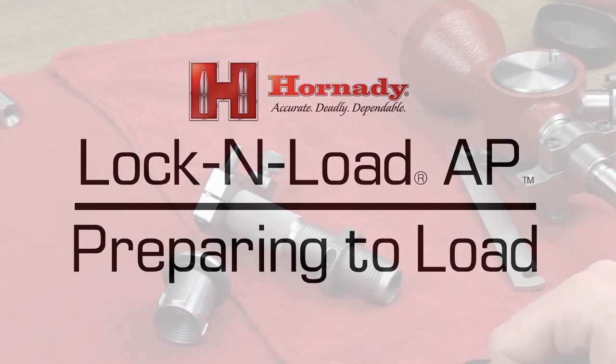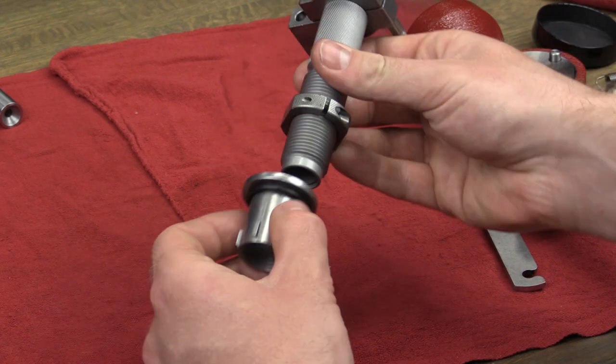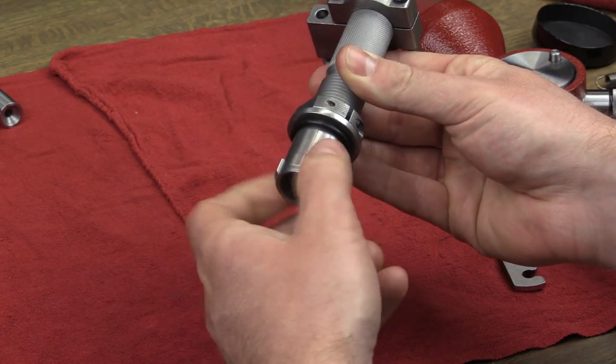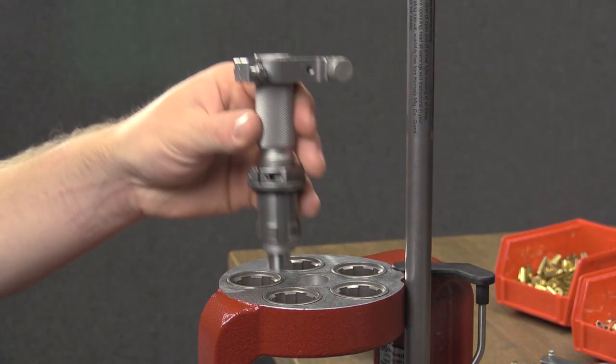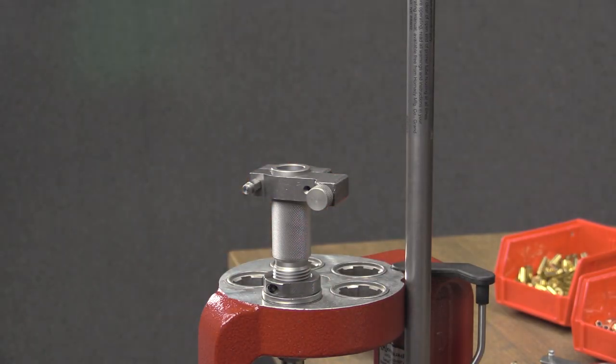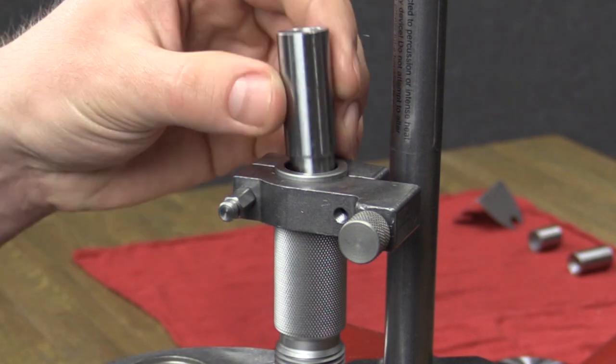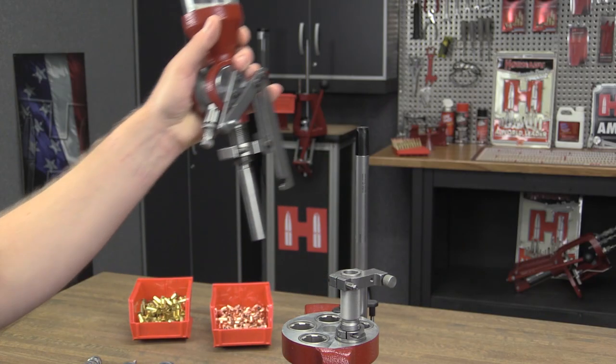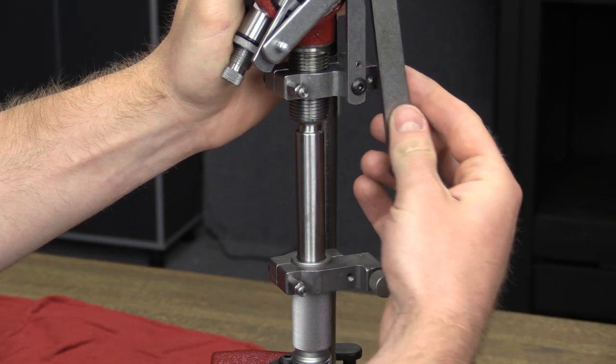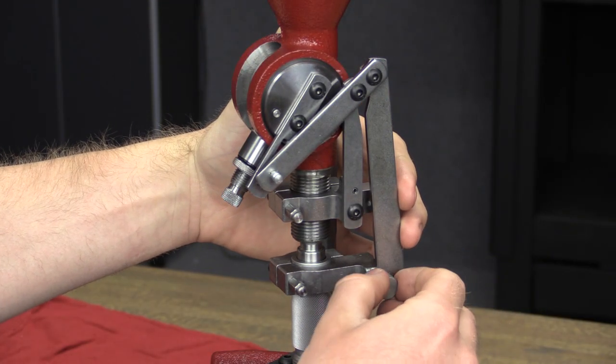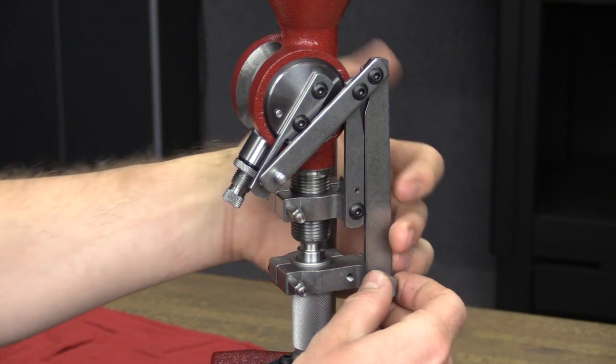Preparing to load. Screw the measure adapter onto the lock and load bushing several turns. Place the lower assembly into the top of the press and rotate to lock into the lock and load bushing. Insert the appropriate powder bushing sleeve. Insert the powder drop tube into the lower assembly. Connect the linkage to the lower assembly by sliding the linkage over the thumb screw and tighten.